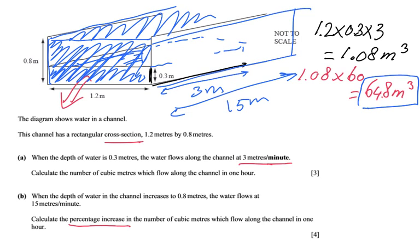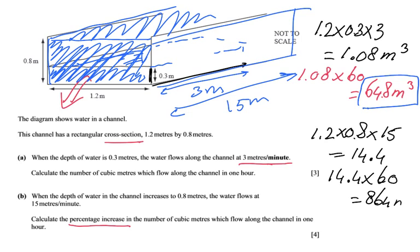However, it's going to be slightly different. It is 1.2 times 0.8 times 15. So the volume is 1.2 times 0.8 times 15, and that equals to 14.4. Put it in your calculator. That's per minute. So per hour I'm going to multiply by 60, so that will equal to 864 meters cubed per hour.